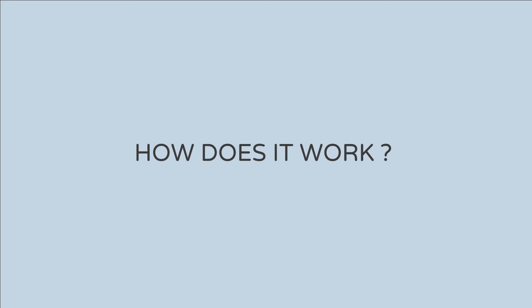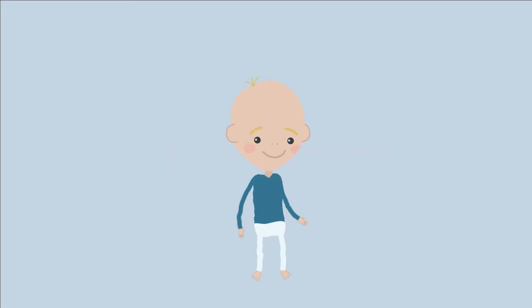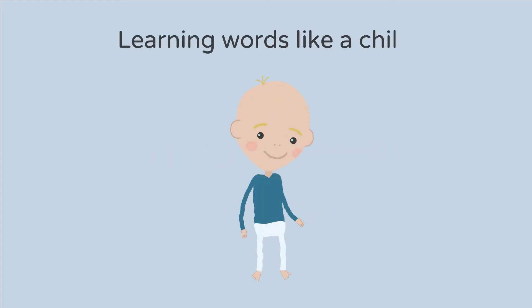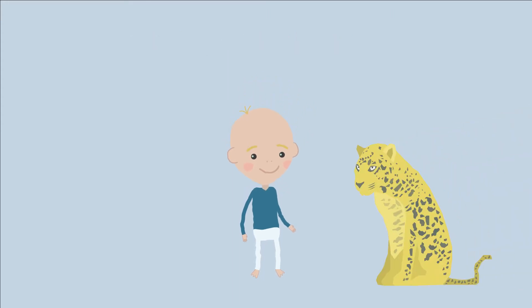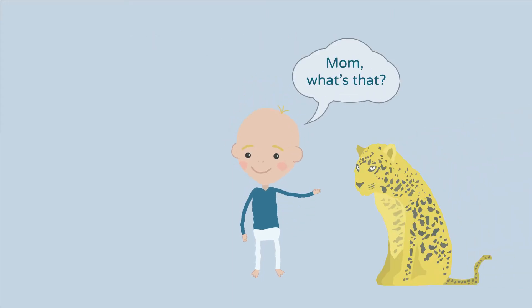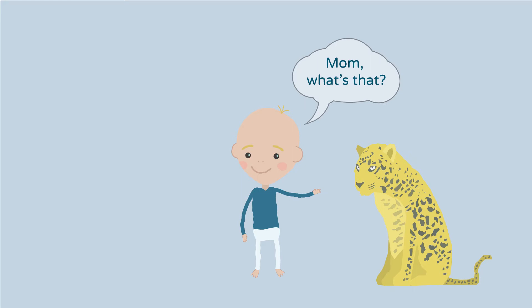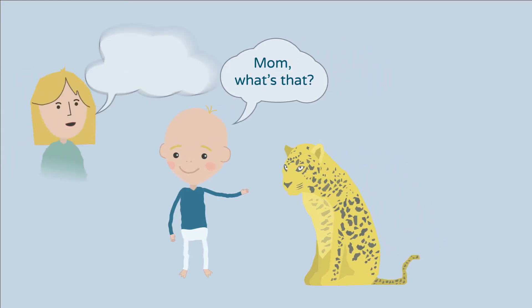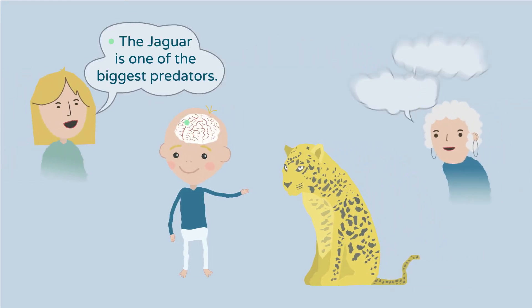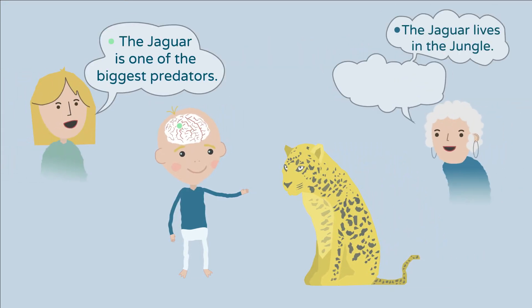So, how does it work? With SEPT, the computer learns like a human. When we teach a child a new word, we do this by giving an explanation that features a set of comprehensive context words. For example: the jaguar is one of the biggest predators living in the jungles of South America.